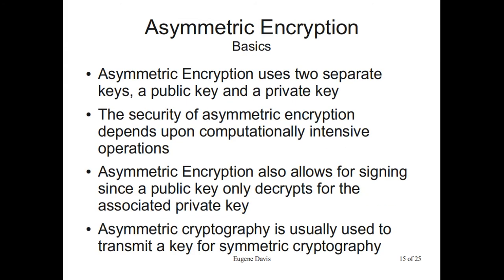The basics of asymmetric encryption: it uses two separate keys. The security depends on it being really expensive to do the operations — this generally means using prime factorization or elliptic curve cryptography. Asymmetric encryption allows you to sign data: if you sign data with your private key and I can decrypt it with your public key, that implies that you as the possessor of that private key have certified this is the data you sent — that's a non-repudiation thing. Generally you use asymmetric cryptography to send a symmetric key, because of the computational expensiveness of asymmetric encryption. Is there a reason to change a key in asymmetric encryption if it hasn't been broken? It reduces the risk that your key has somehow leaked without you knowing it — that's the real reason why you change good keys anyway.